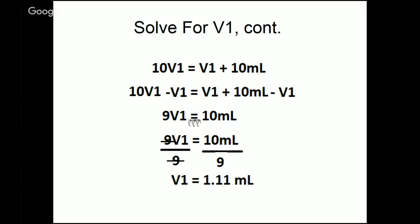Now to figure out what V1 is, all I have to do is divide both sides of this equation by 9, to get that 9 out of the way. So divide it by 9 over here, it cancels out. If I divide by 9 on this side, I've got 10 divided by 9. And that tells me that my V1 is 1.11 mils of solution.